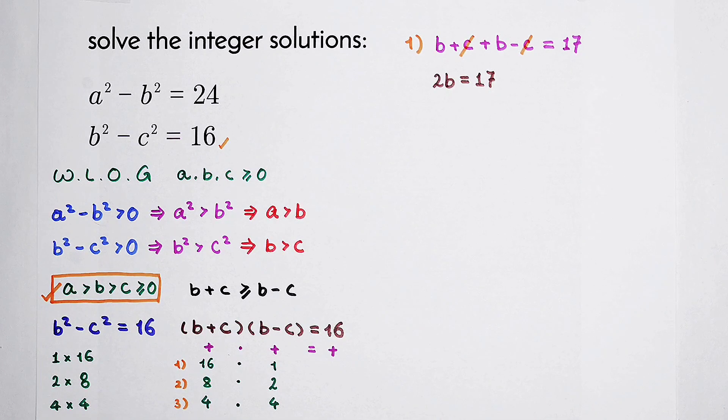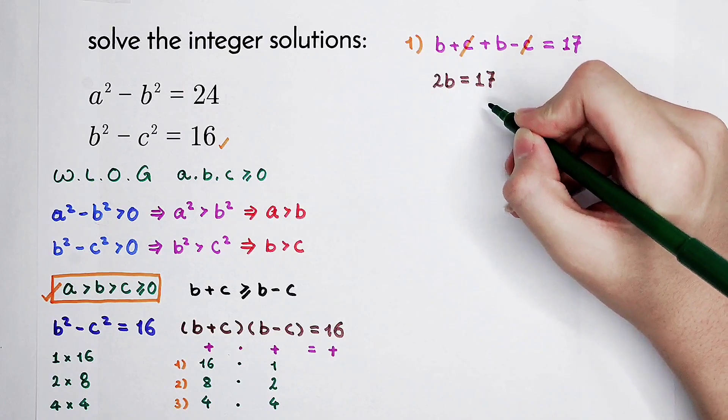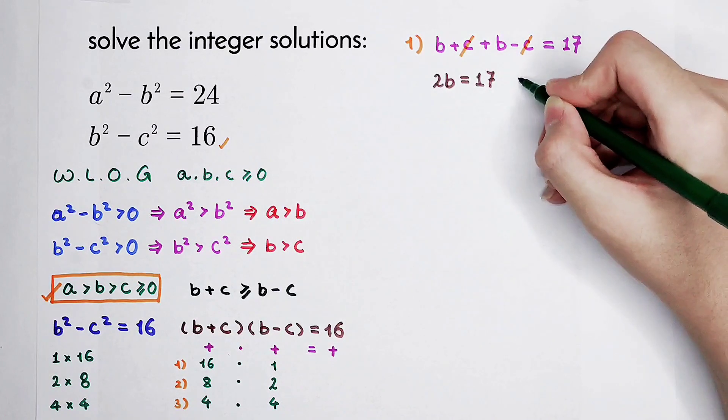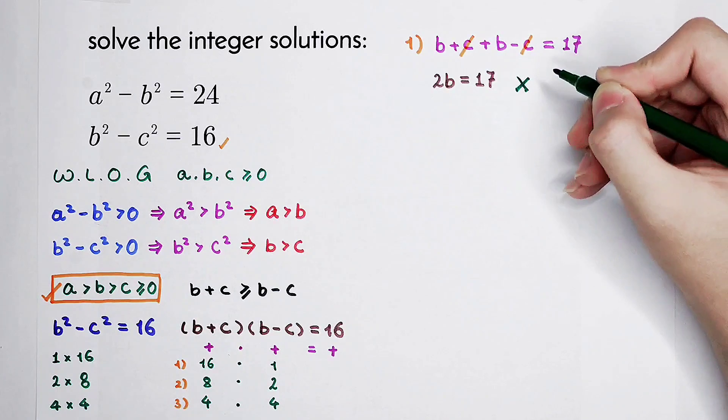If 2b is 17, then b is not an integer because 17 is odd, not even. So in this case, there aren't any solutions.